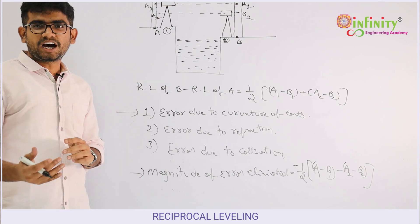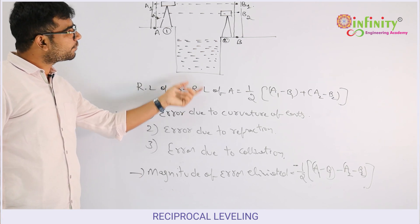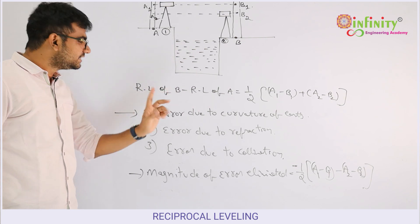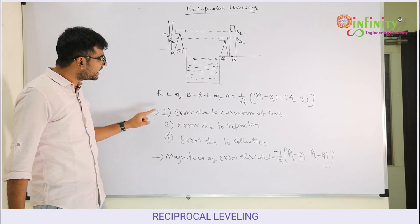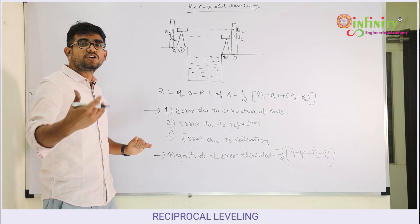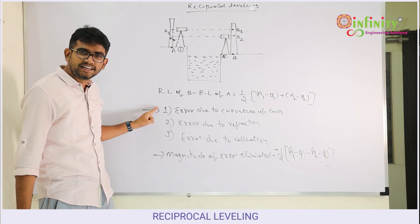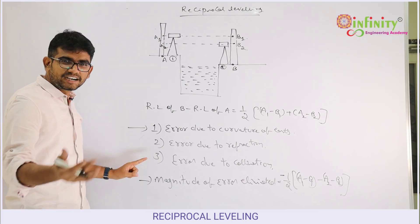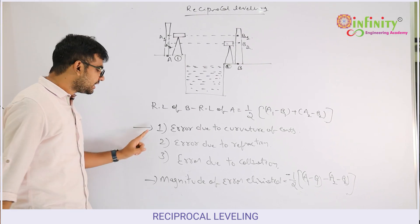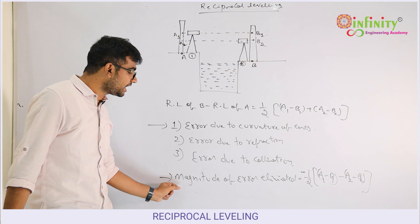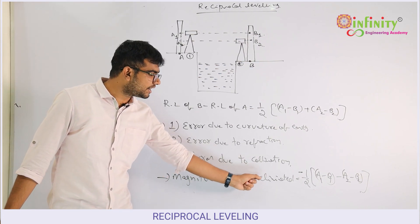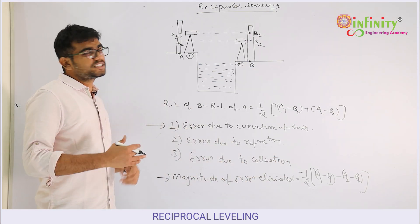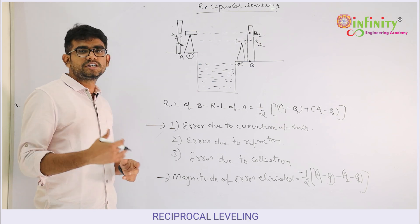On this topic, questions can be asked in different ways. They may give the RL of one point along with all four readings and ask you to determine the RL of another point. They may ask which of the following is NOT a type of error eliminated in reciprocal leveling — for example, error due to incorrect graduation would be the answer. They may also ask for the magnitude of error eliminated given the four readings. These kinds of questions appear in MPSC, WID, ZP, and GATE exams.